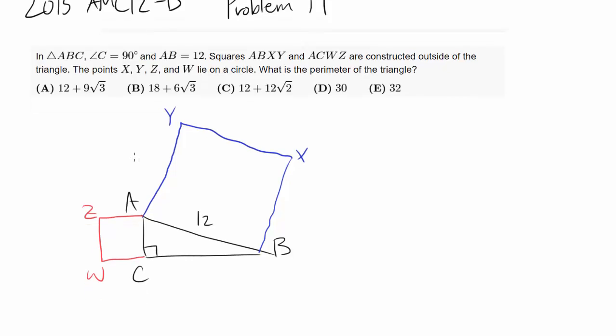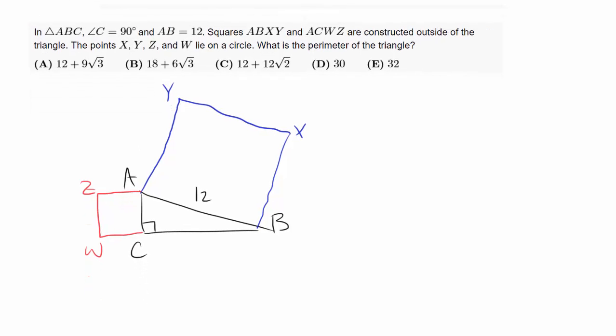So the points X, Y, Z, and W lie on a circle. So we can draw a circle that goes through this point, this point, this point, and this point. So let's draw an imaginary circle that goes through all of these points. Maybe something like this.